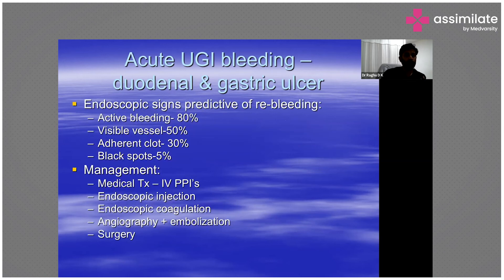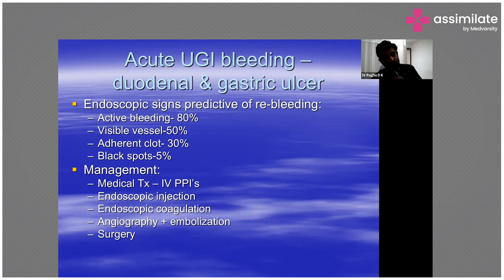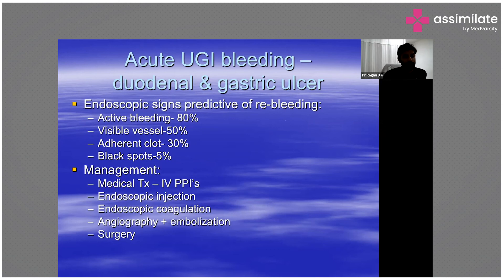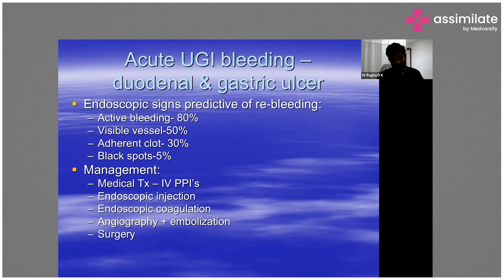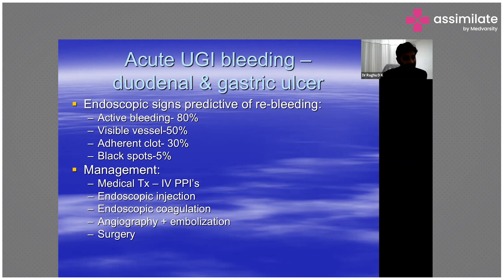Older patients have higher bleeding risk due to lower prostaglandin synthesis. Endoscopic signs predicting re-bleeding: active bleeding at endoscopy means very high risk; a visible vessel carries about 50 percent risk; an adherent clot about 30 percent risk; black spots about 5 percent risk. These characterize the risk of re-bleeding based on endoscopic findings.